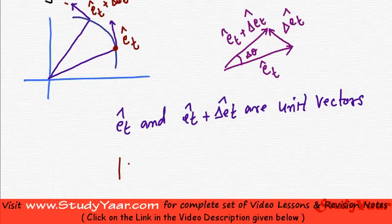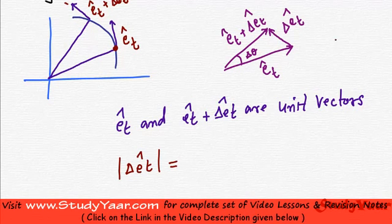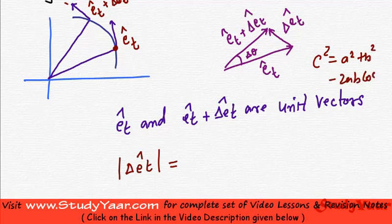My magnitude of delta ET vector is going to be - we are going to use the cosine law which says that C squared is equal to A squared plus B squared minus 2AB cos C.